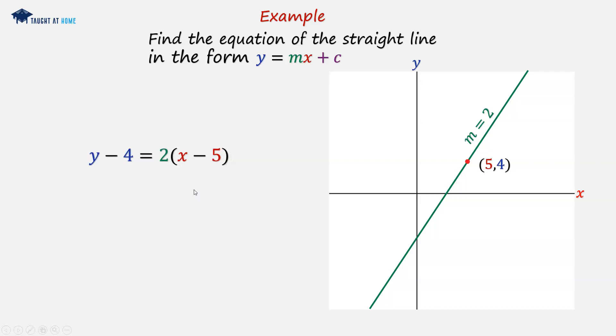Now what we can do is we can multiply out the brackets on the right hand side here. So we've got 2 times x, and we've got 2 times minus 5, so that'll be 2x minus 10.